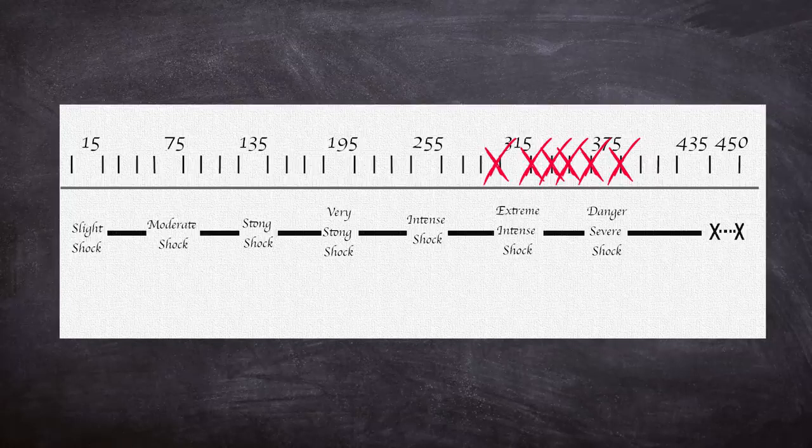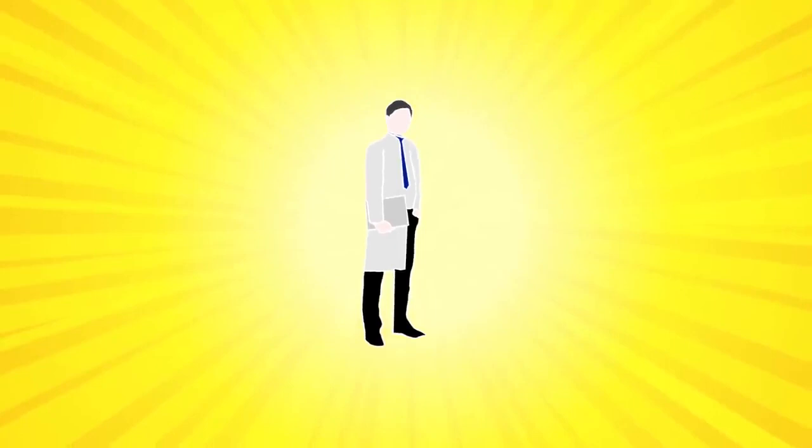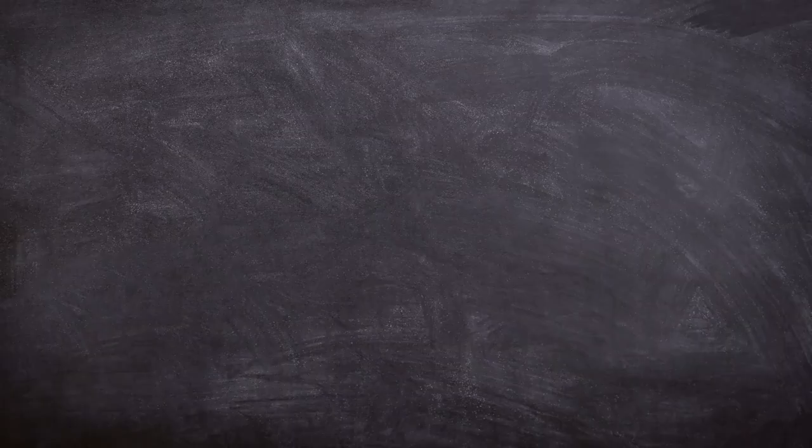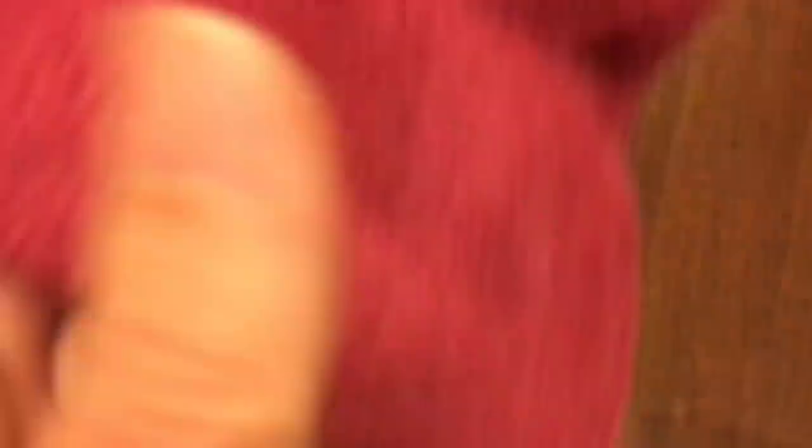This meant that 26 proceeded all the way to the end, giving the highest available shock to the learner. Although most showed signs of discomfort and stress, they still obeyed the perceived authority of a guy in a white lab coat. The results were understandably unexpected, as from a young age we are taught to not hurt others, but with the addition of an authority figure, the teacher would abandon this fundamental part of their moral fabric.